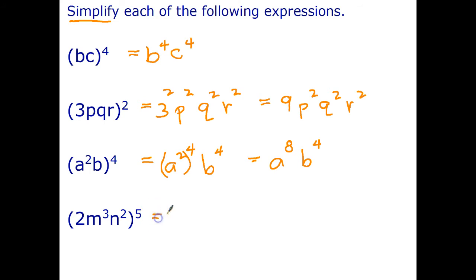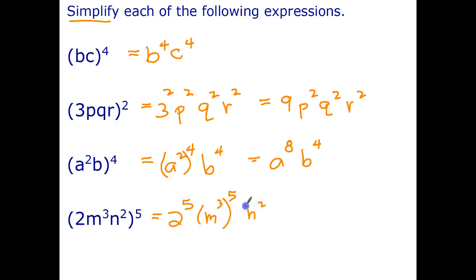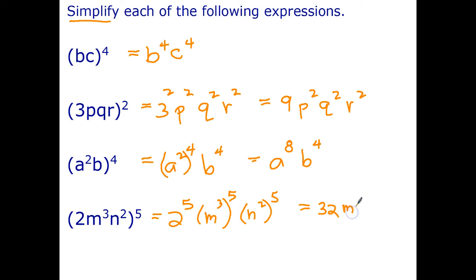Similarly, 2m cubed n squared all to the power of 5 gives us 2 to the 5th, m cubed to the 5th, n squared to the 5th. I've removed the outside brackets but still have one more step to simplify completely. Well, 2 to the power of 5 is 32. To raise a power to a power, we multiply powers: m cubed to the 5th is m to the power of 15, and n squared to the 5th is n to the power of 10.